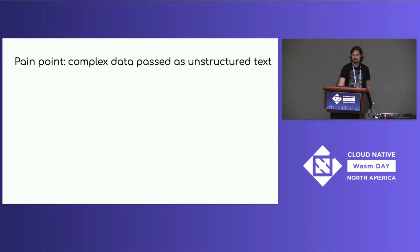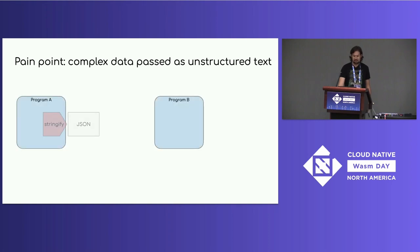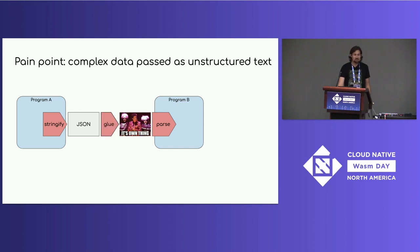Our second pain point is complex data passed as unstructured text. A common experience is program A spits out some JSON, you'd like to feed it into program B, but in practice program B takes its own arbitrary input format — so you have to write glue code to adapt between the two, which is a composability pain point. Additionally, program A has to stringify the JSON and program B has to parse its input format, which costs performance. In this nanoprocess model with lots of itty-bitty nanoprocesses, this can add up to a significant percentage of overall time.